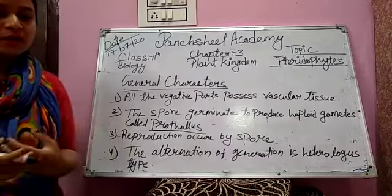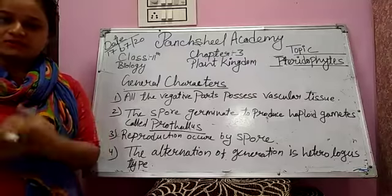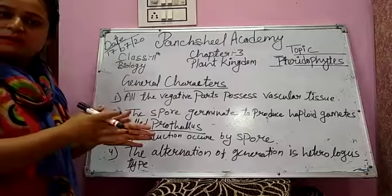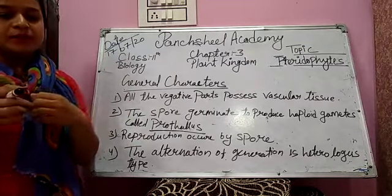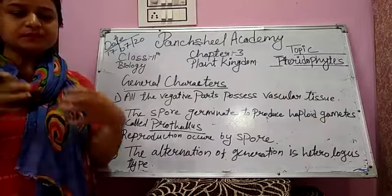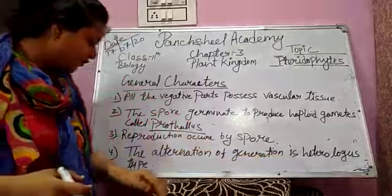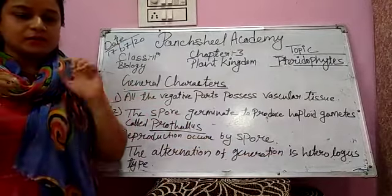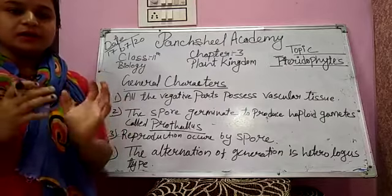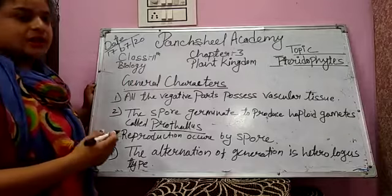Sexual reproduction occurs by means of gametes. The male sex organ is antheridium and the female sex organ is archegonium — both organs are present. The male gametes and female gametes are separate. Fertilization occurs in the presence of water. We see an alternation of generations of heterologous type. The diploid zygote is retained within the archegonial venter and develops into an embryo, attached to the gametophyte and nourished during the early stage of development.